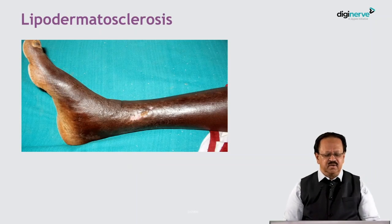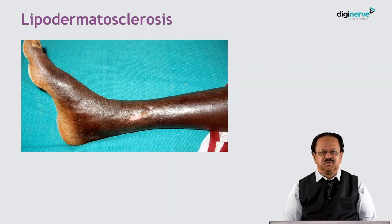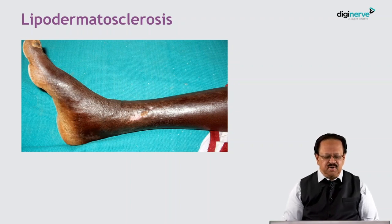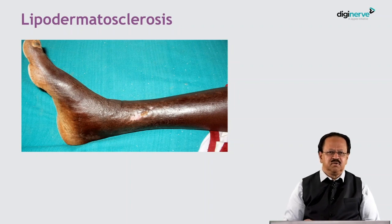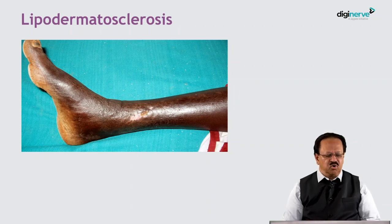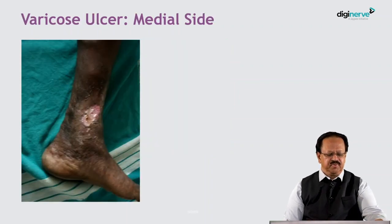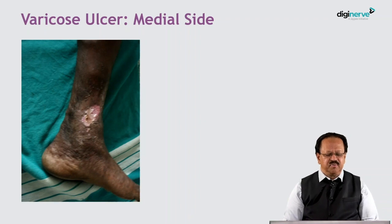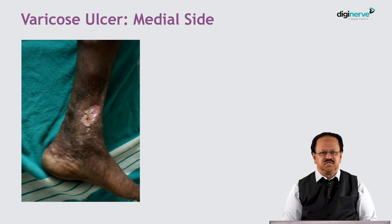And this is lipodermatosclerosis, which is a woody hard leg in the lower leg which almost resembles an inverted champagne bottle. You can see hyperpigmentation and also venous ulceration.